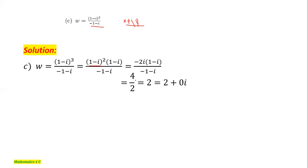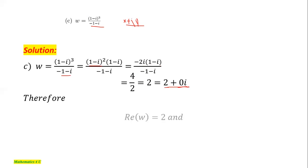This is equal to 2, or equivalently 2 plus 0i. Therefore, if the simplified form of this fraction is 2 plus 0i, the real part is 2 and the imaginary part is 0.